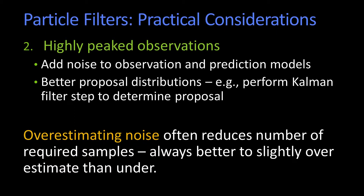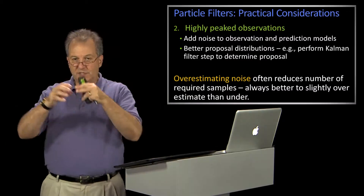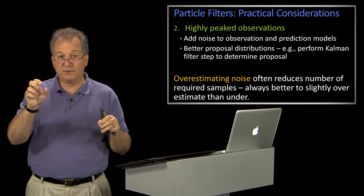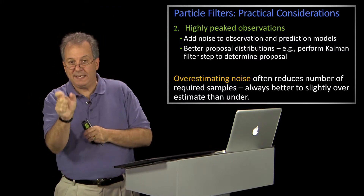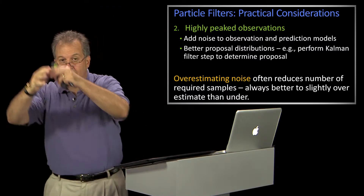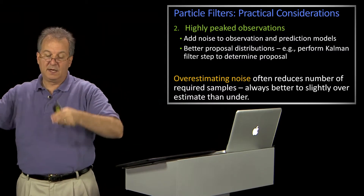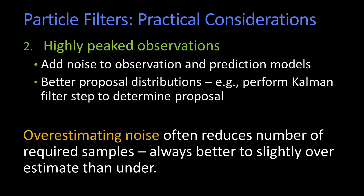You also might want to be better at how you do your proposals to begin with. You want to make sure that your particle filter spreads out the points. One way of doing that is to think of each sample as having its own little mini Kalman filter — a Gaussian that spreads itself out and goes forward. In general, you're much better off overestimating noise and letting your measurements narrow you down, than underestimating noise and having your measurements think they're much more constraining than they are.